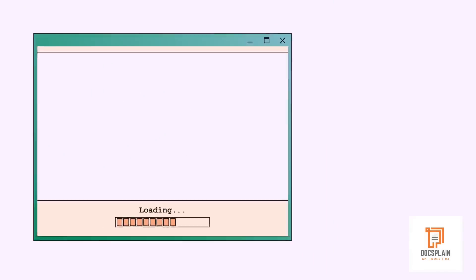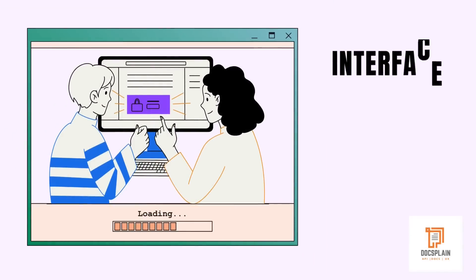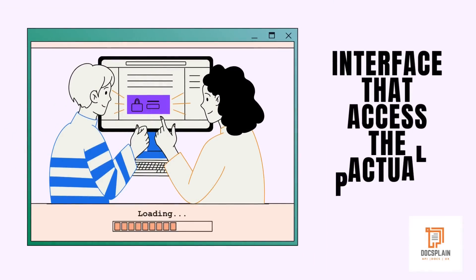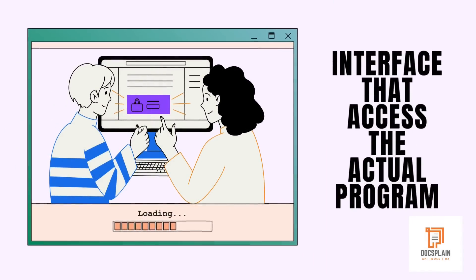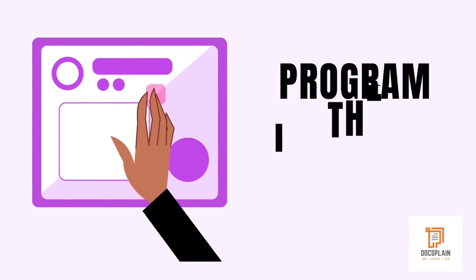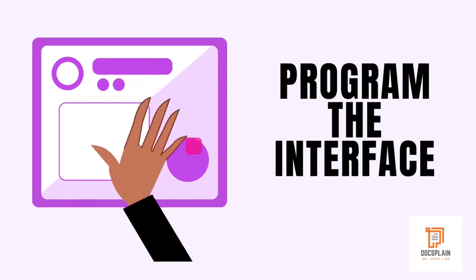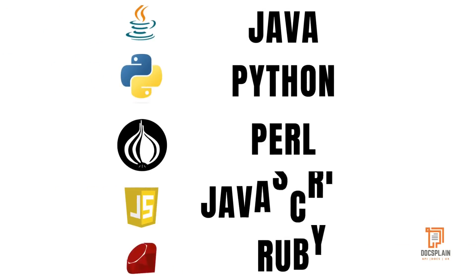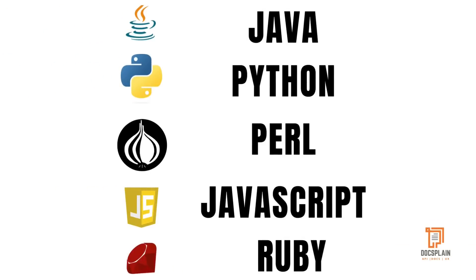An API is a programmable interface to interact with the actual programming code or functionality. This programmable interface can be written in any programming language such as Java, Python, Perl, JavaScript, or Ruby.